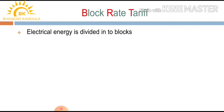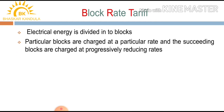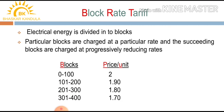In block rate tariff, the use of electrical energy is divided into blocks. The electrical energy of a particular block is charged at a particular rate, and the succeeding blocks are charged at progressively reducing rates. For example, 0 to 100 units is considered as the first block.